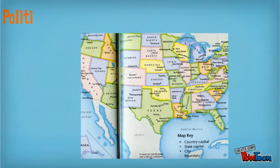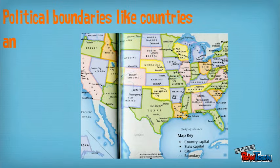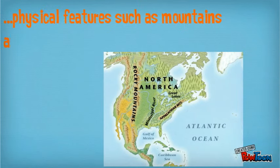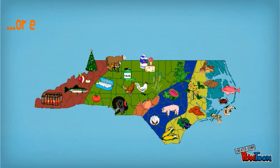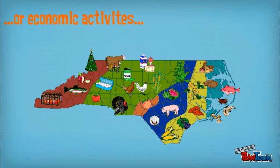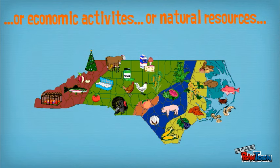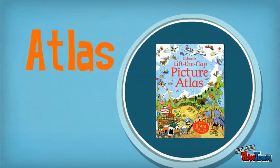So remember, if you want to know where political boundaries are such as countries or states, or if you want to know the physical features of an area like mountains and rivers, or if you want to know what kinds of economic resources an area is known for like crops or manufacturing, or what natural resources can be found there like gold or other rocks and minerals, the reference material you need is an atlas.